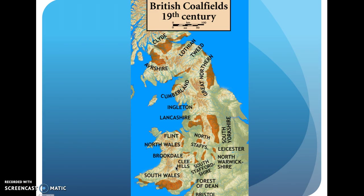This is a picture of British coal fields. All these dark areas are where we could find coal in the ground in Britain. It may not look like a lot, but this is actually considered a lot of coal for a small island. Britain has a ton of coal that can be used as a natural resource to power these machines and factories.